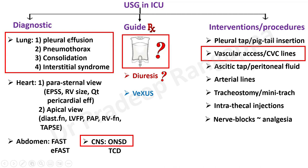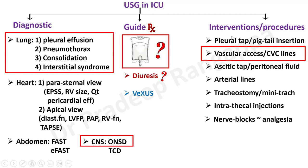For diagnostics in the lung, we could look at pleural effusion, pneumothorax, consolidation, and interstitial syndrome — which is pretty much pulmonary edema. We have something called the Blue Protocol, which I'll touch on. For the heart, echocardiography is a separate science in itself — we assess LV function, RV function, and cardiac output. In the ICU, we tend to use echocardiography more to look at fluid responsiveness and adequacy of fluid resuscitation. For the abdomen, there's FAST and eFAST, which ER physicians are more proficient at.